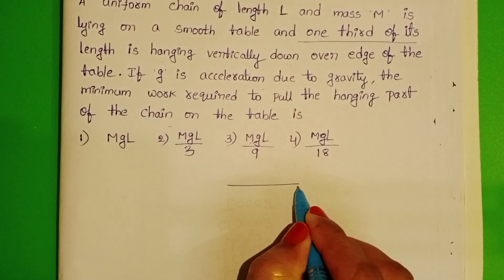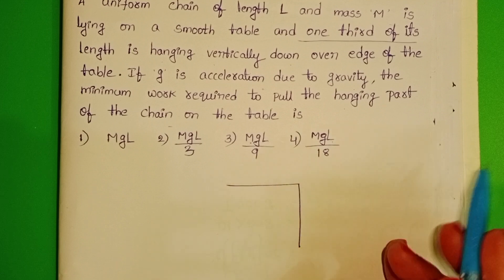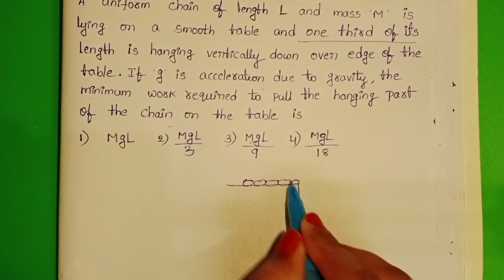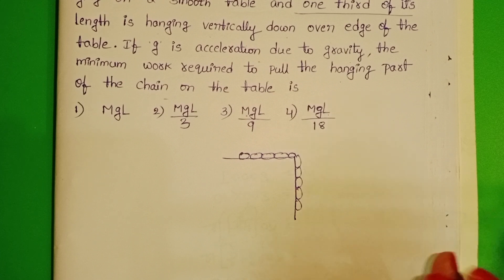In the given question, a chain is placed on the smooth horizontal table. One third of the chain is hanging vertically down over the edge of the table.